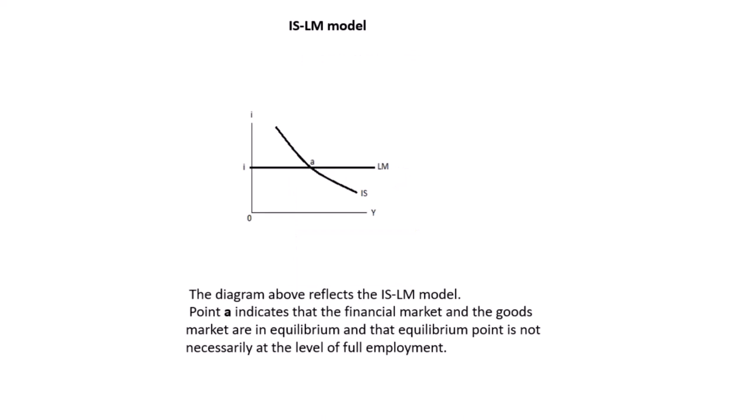Having discussed the IS curve and the LM curve, where these two curves intersect is your equilibrium in the goods and financial markets. Interest rate I is on the vertical axis; Y is on the horizontal axis. The IS curve is downward sloping from left to right — we know why. The LM curve is perfectly horizontal — we know why. Where those two curves intersect at point A, that is your equilibrium point, where the financial market and the goods market are both in equilibrium.